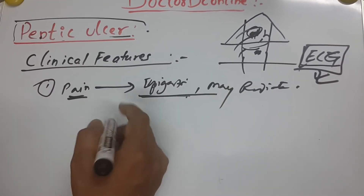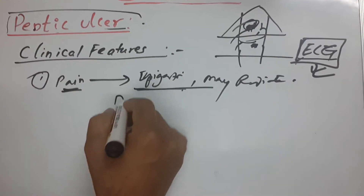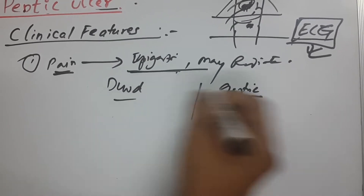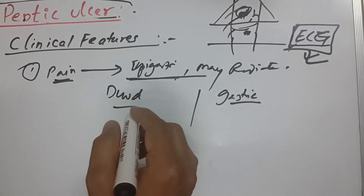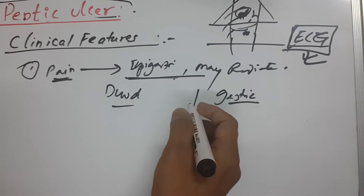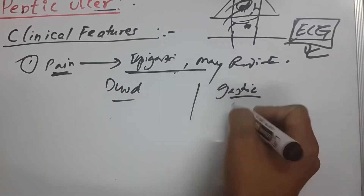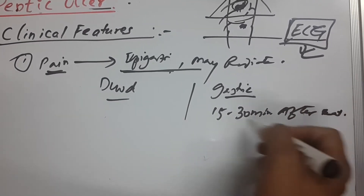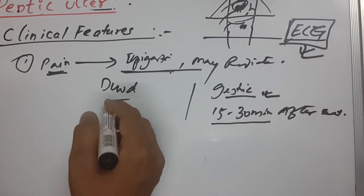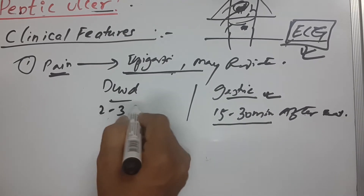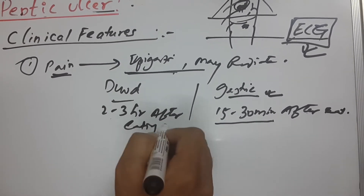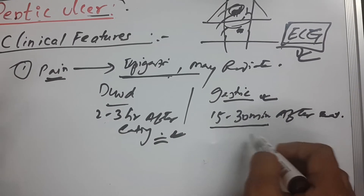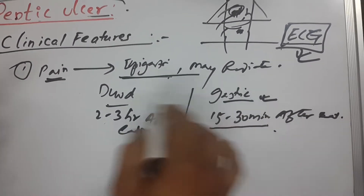Another important point: how do you differentiate duodenal ulcer from gastric ulcer according to pain? If the pain comes soon after eating — within 15 to 30 minutes — then it is a gastric ulcer. If the pain comes 2 to 3 hours after eating, that is a duodenal ulcer. You need to remember these things very carefully.